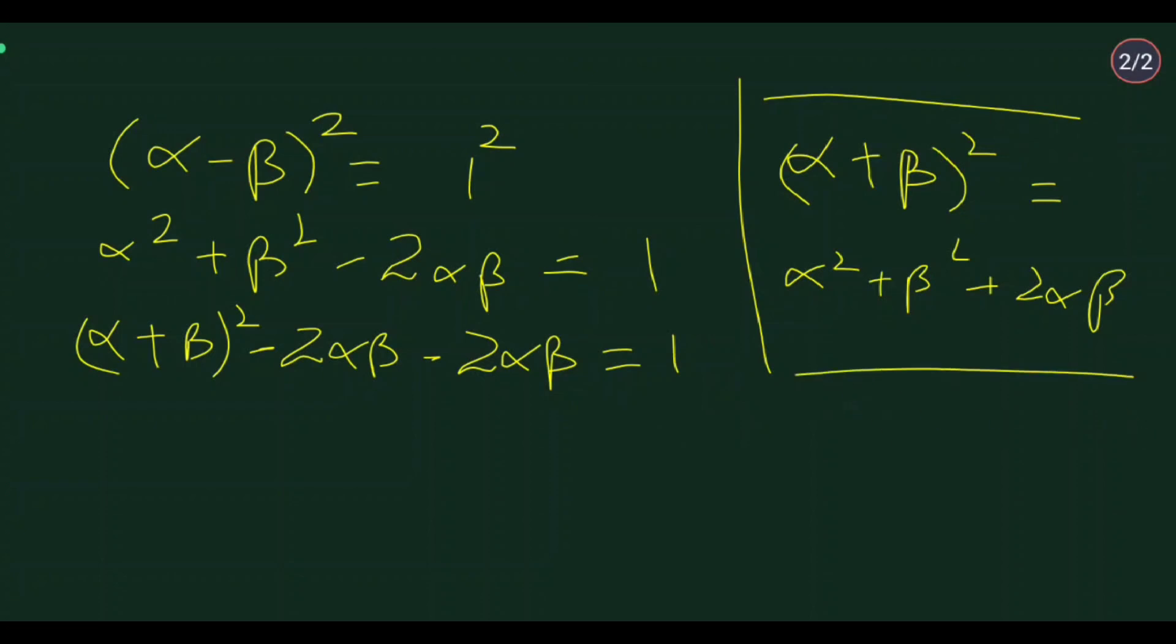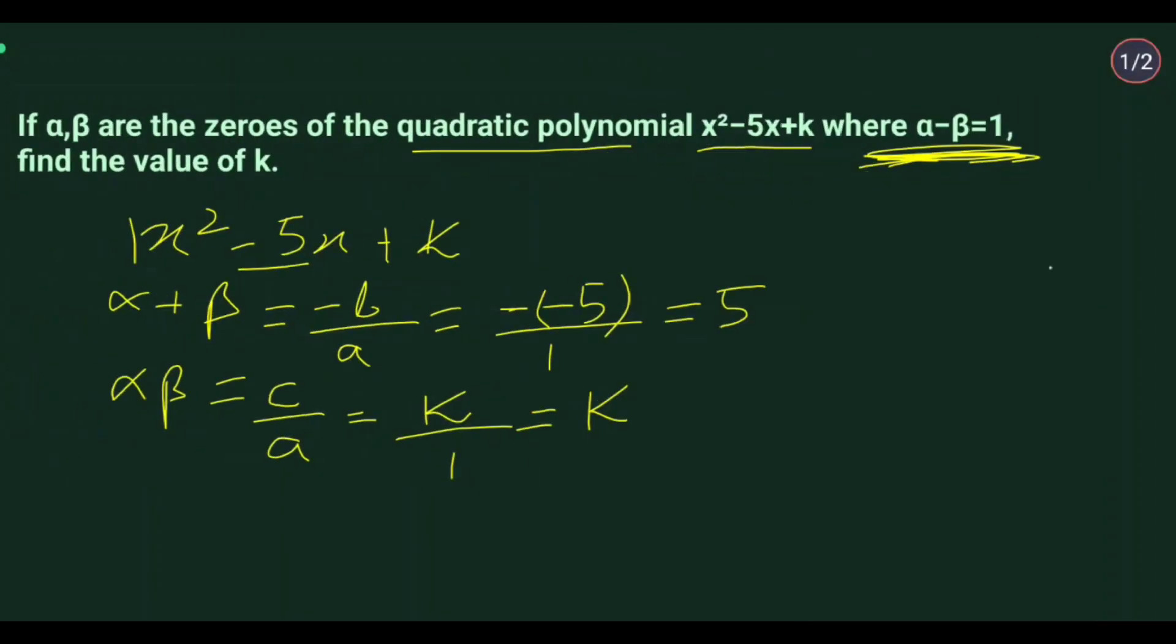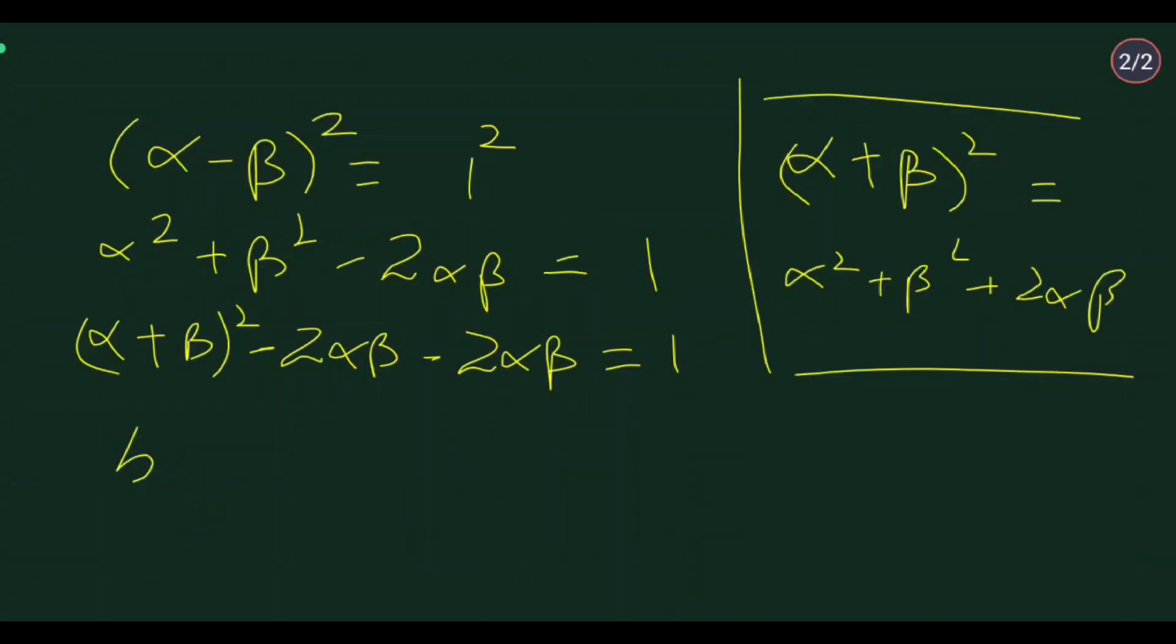Substituting α² + β² into the equation: (α + β)² - 2αβ - 2αβ = 1. Now put in the values α + β = 5 and αβ = k: 5² - 4k = 1.